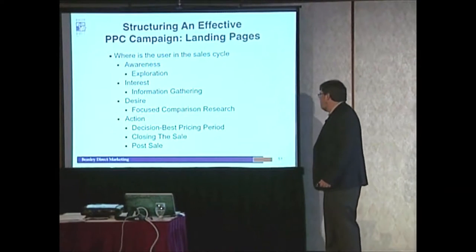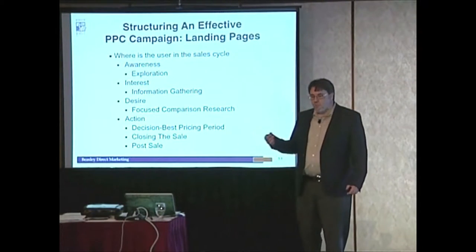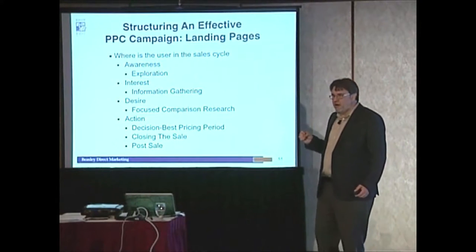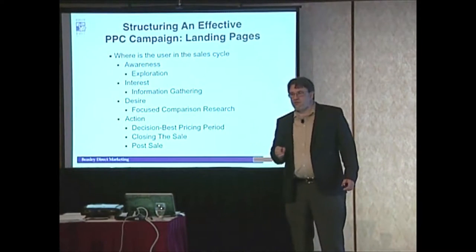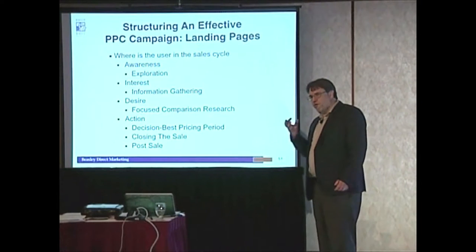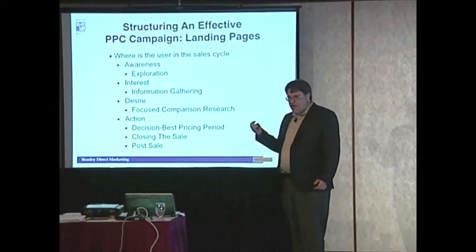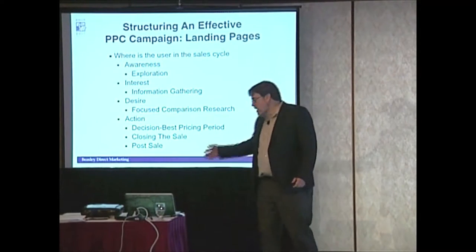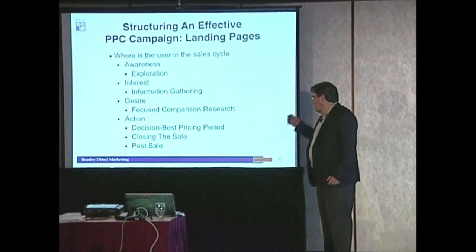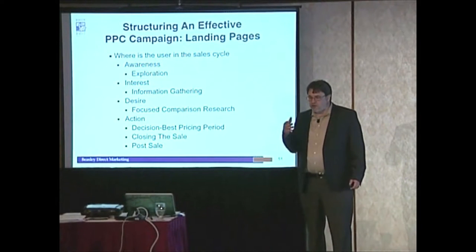There are different spots in the sales cycle. The awareness and exploration stage calls for a more educational landing page. The desire stage is more about hitting hot buttons and talking about how you can solve their needs — you may not ask for the sale yet, but you'll say 'learn more' or 'find out more.' Then at the action stage, you can use decision-based pricing, close the sale with benefits, or even have a post-sale page for add-on sales to customers who've already converted.